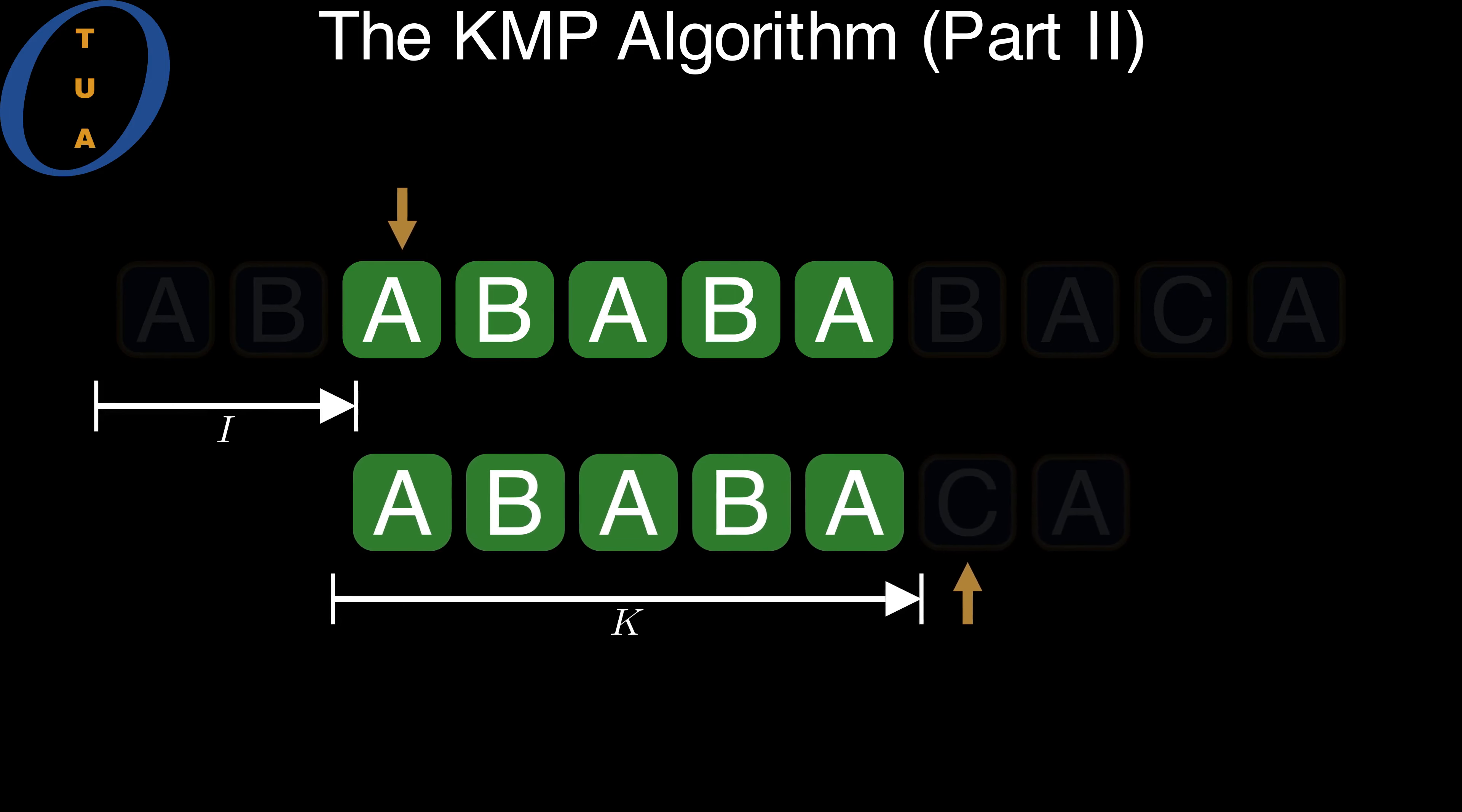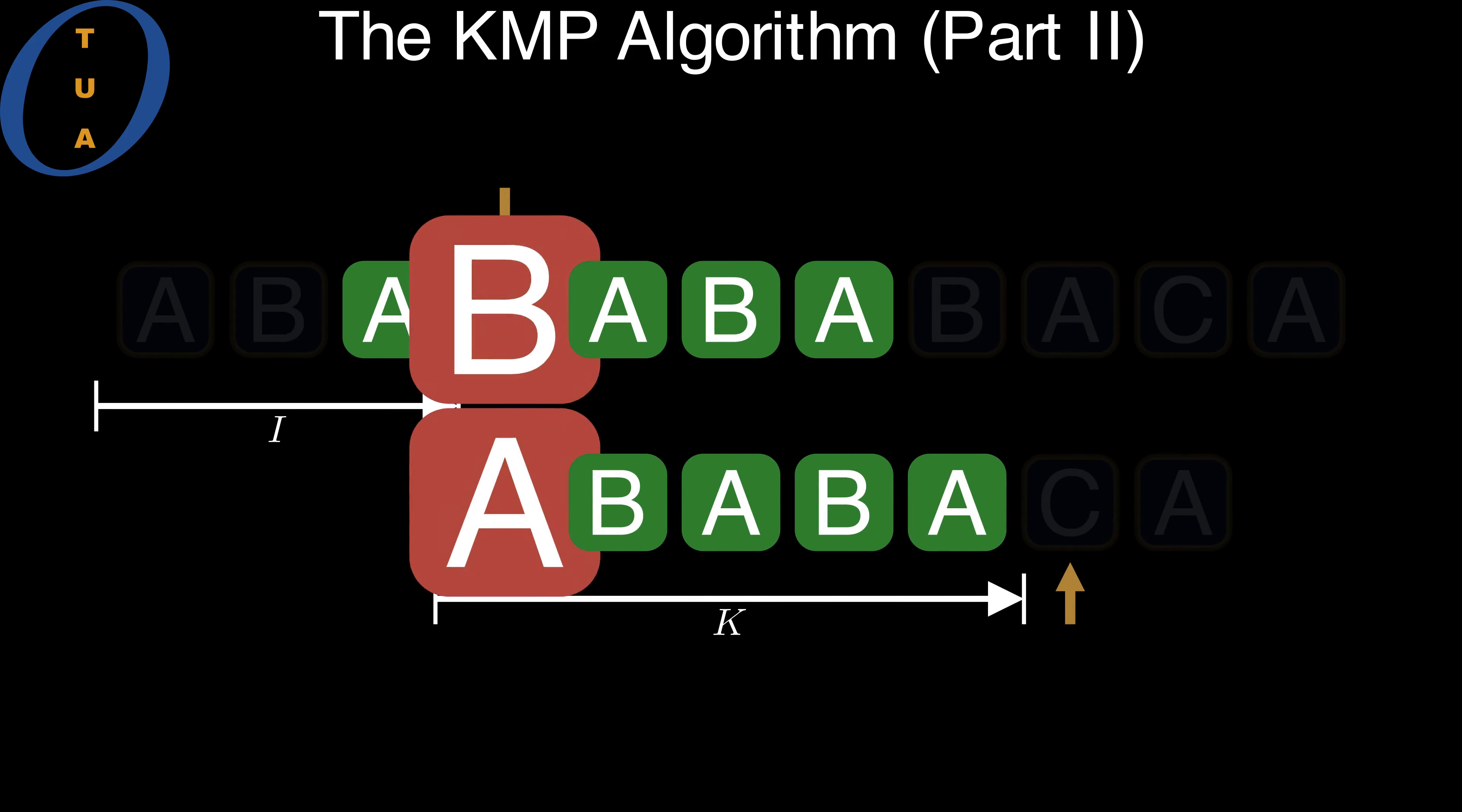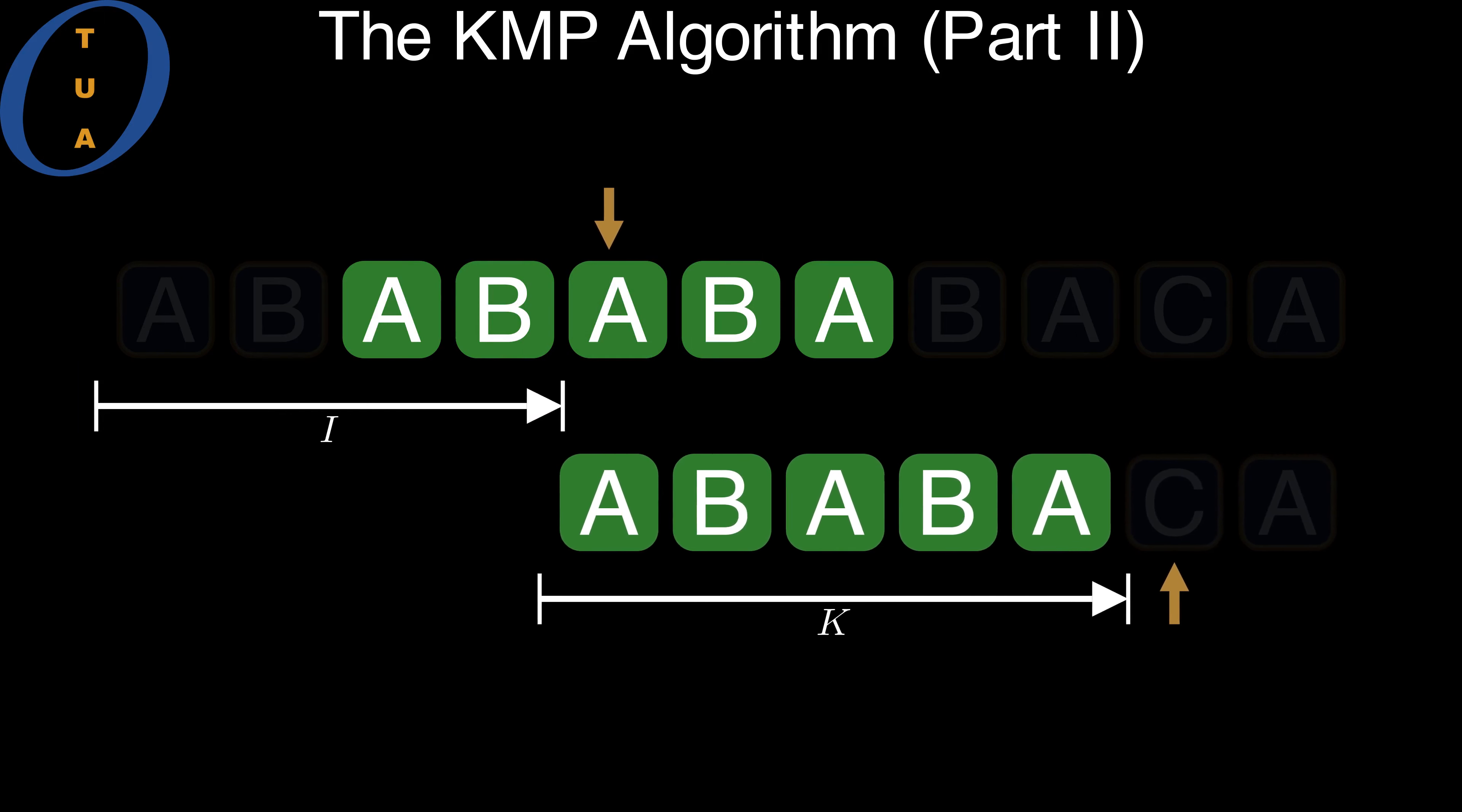In our example, by using just the information that we have available, we can see clearly that the next offset is not a match, because at least some of the aligned symbols in the overlap are different. So KMP skips over this offset altogether.